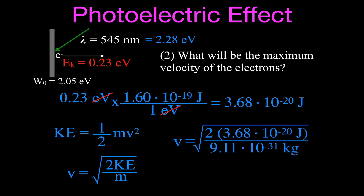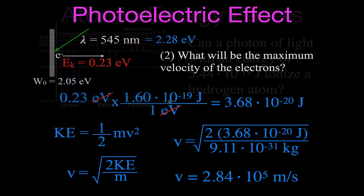Plugging the values in: the velocity equals the square root of 2 times 3.68 times 10 to the minus 20 joules divided by the mass of an electron, which is 9.11 times 10 to the minus 31 kilograms. We get a velocity of 2.84 times 10 to the 5 meters per second. We found that by converting between electron volts and joules using the conversion factor.